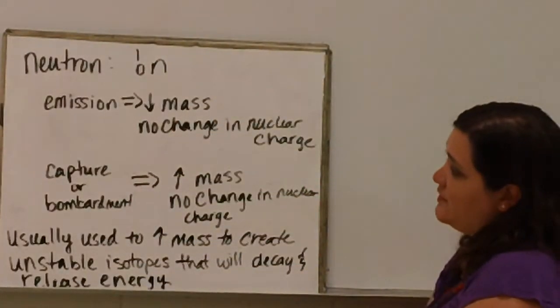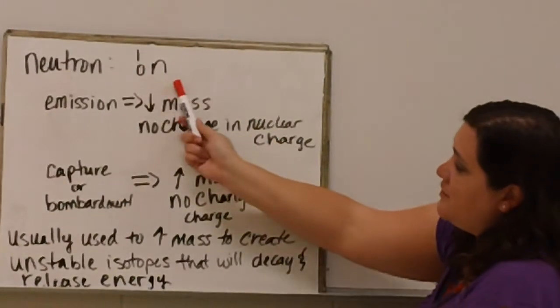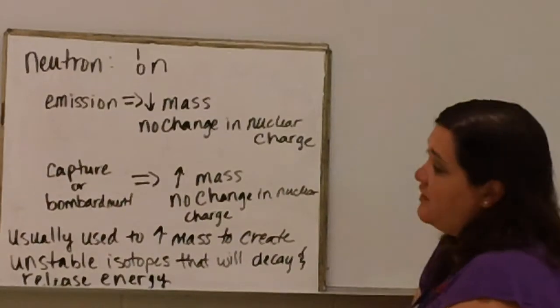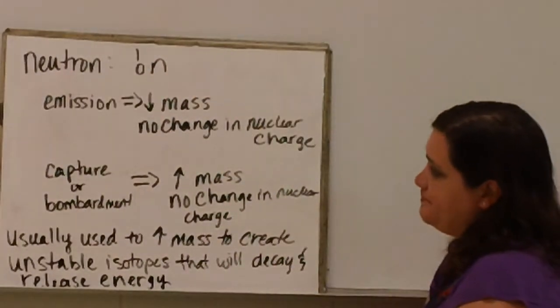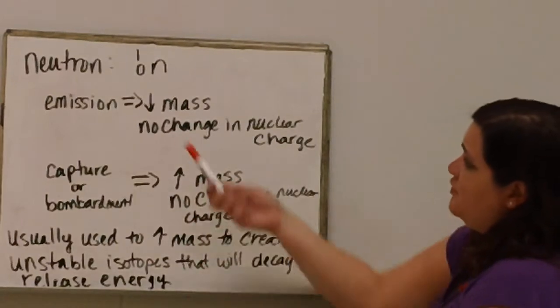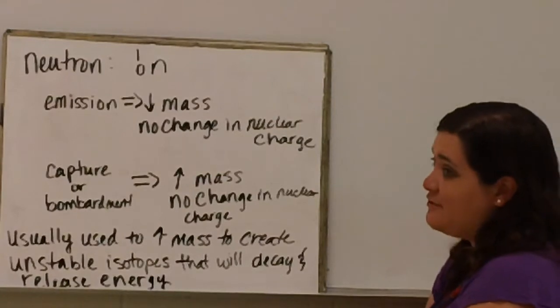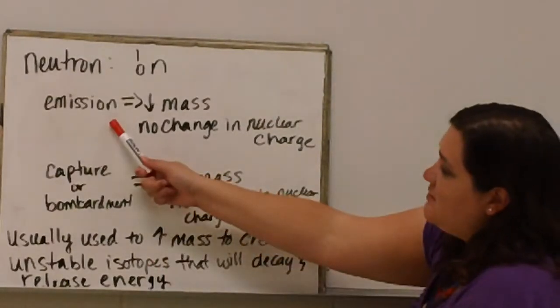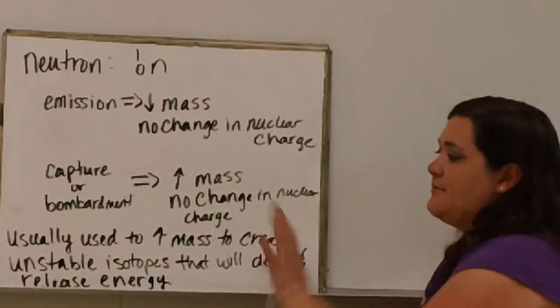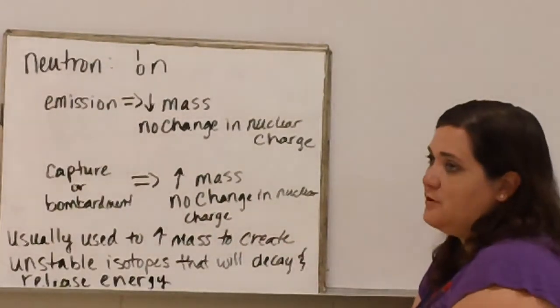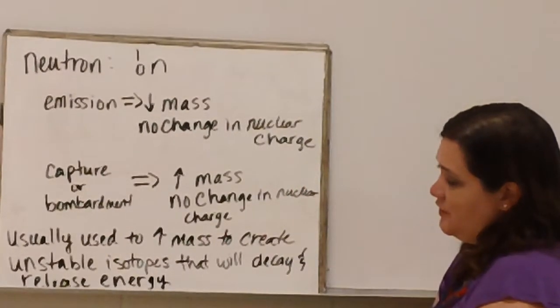A neutron we have looked at before. For nuclear chemistry, when we do equations in the next video, we will use the symbol 1-0-n for a neutron. Make sure that we use a lowercase n so we can distinguish it better from nitrogen. Neutron emission is going to decrease the mass and have no change in charge. If we capture or bombard neutrons to something else, it is going to increase the mass but still have no change in nuclear charge.